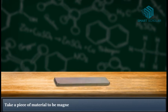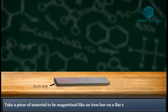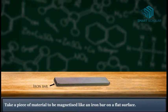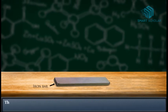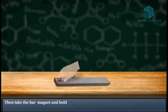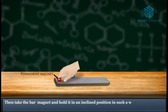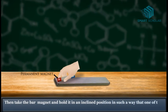Take a piece of material to be magnetized like an iron bar on a flat surface. Then take the bar magnet and hold it in an inclined position in such a way that one of the poles of the magnet touches the iron bar.